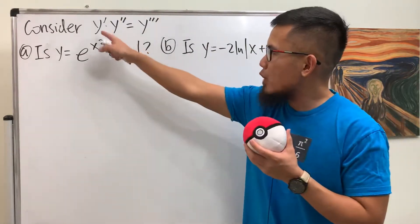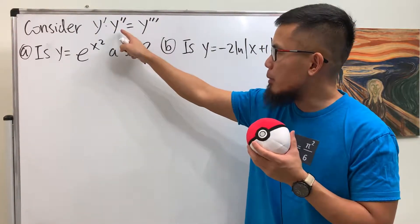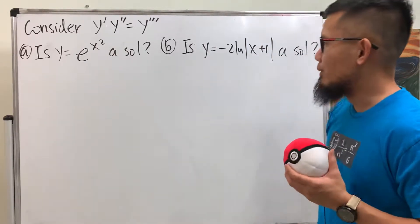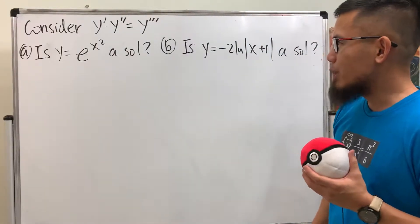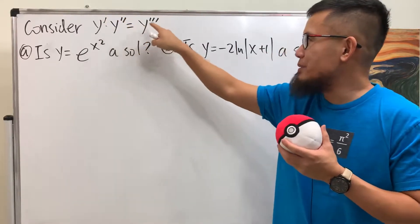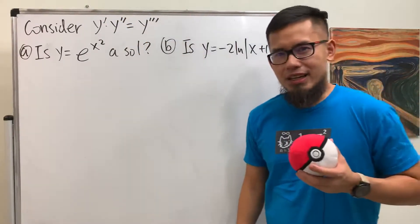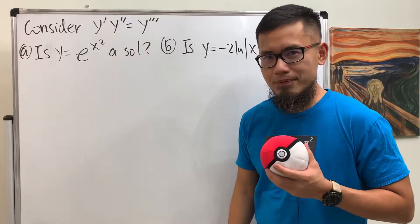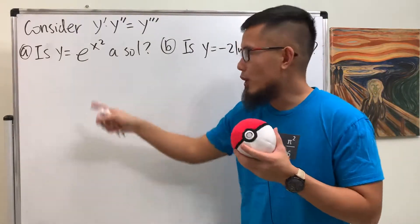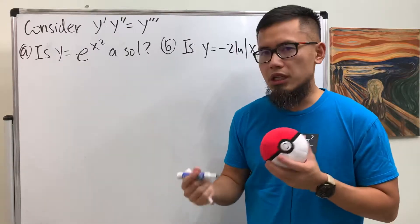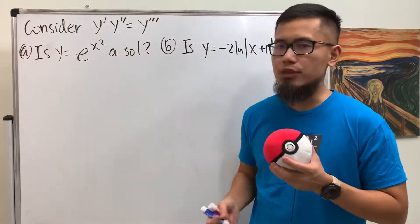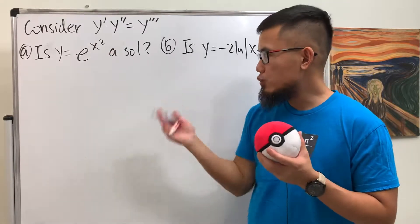Here we have y prime times y double prime equals y triple prime. Wow — we can just add the primes like that: one prime plus two primes equals three primes. Are we sure? Well, let's verify. The first candidate is y equals e to the x squared. We'll have to differentiate this y three times and plug in to see what happens.